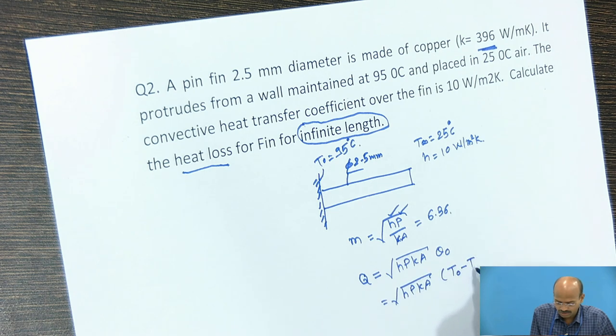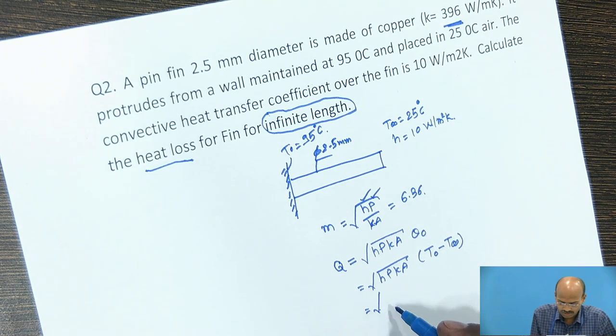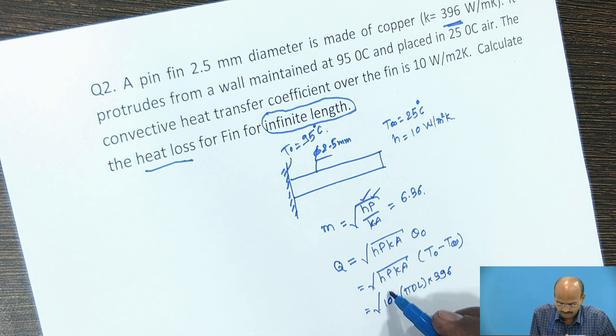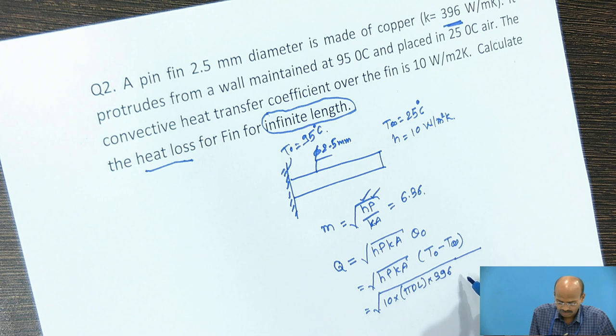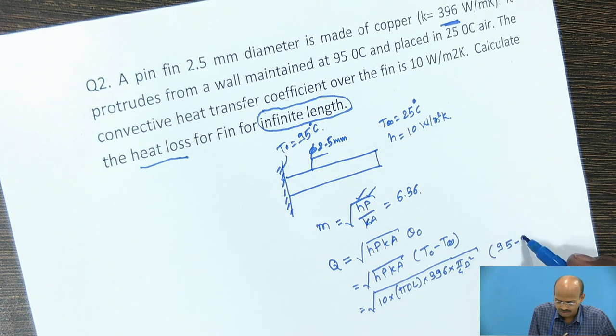T naught is 95 minus 25 into area pi by 4 D square.